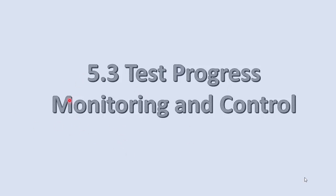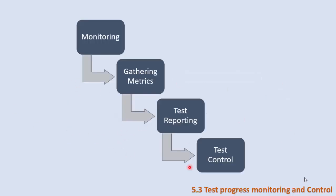In this section we will talk about test progress monitoring and control. The control process passes through these steps: first we perform testing, then we monitor the testing results, which allows us to gather metrics that are collected inside a test report. From this test report and its results, we can perform the control activities.